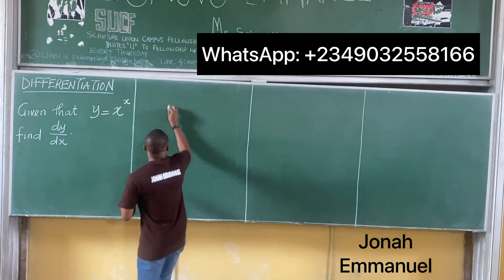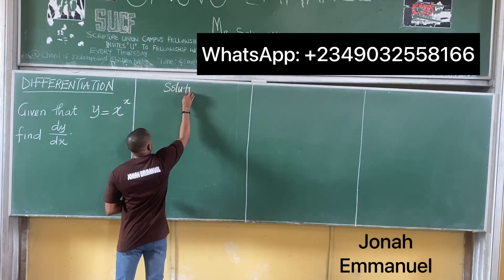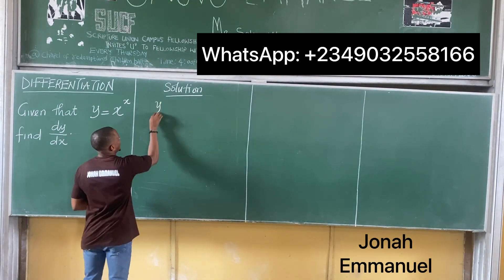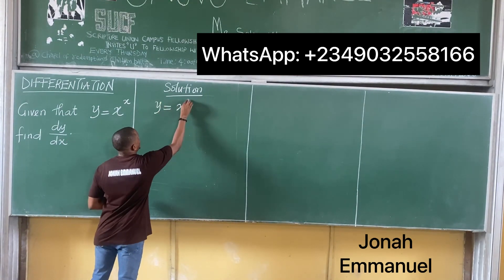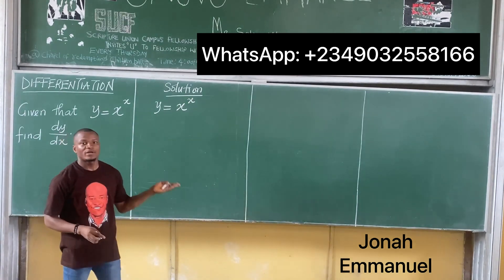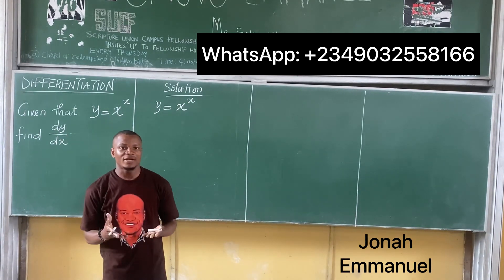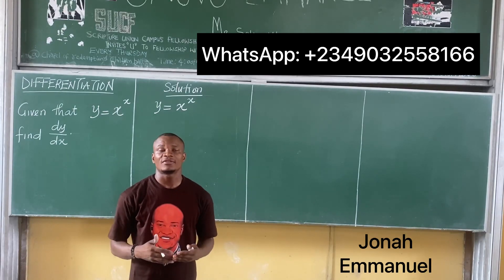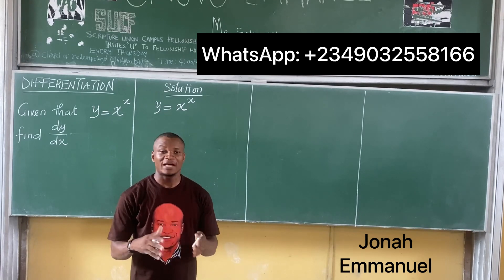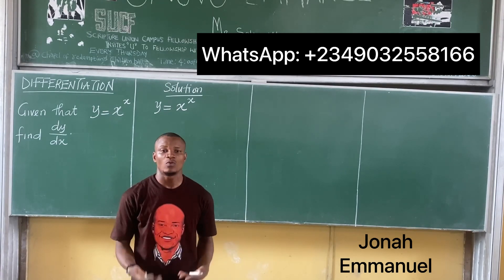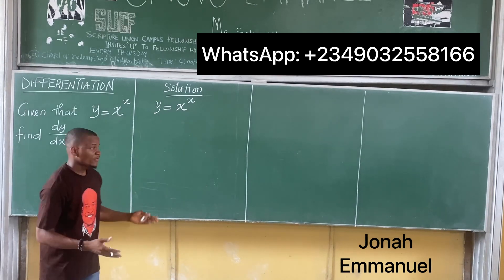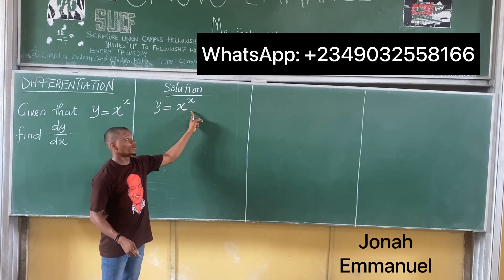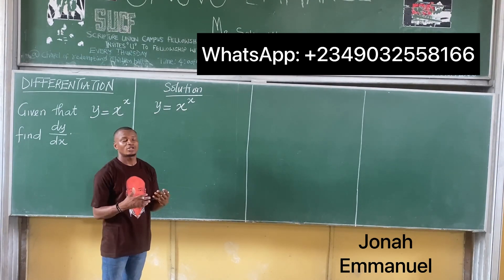Solution. I am given that y is equal to x to the power x. Usually for this, we would assume that perhaps we could use the general method of differentiation. For the general method, the idea is that we multiply by the power and subtract 1 from the power. But the thing here is, for this question, the power is still the variable x, and not a number.